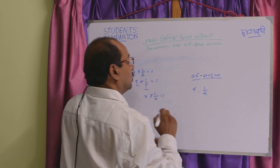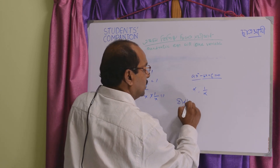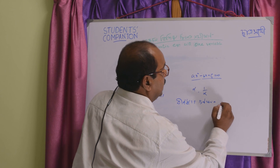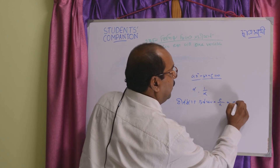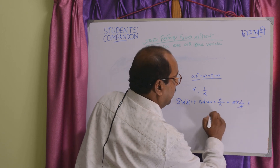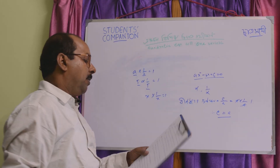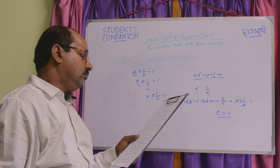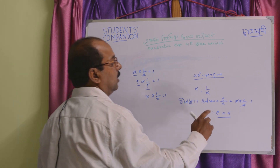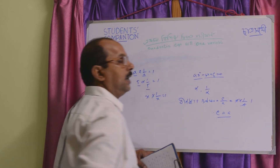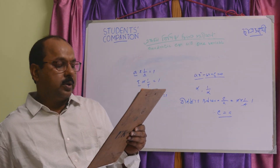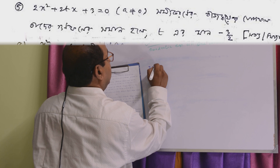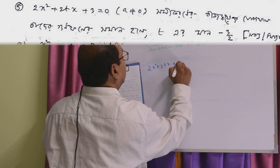If alpha and 1 by alpha are reciprocal roots, then their product is alpha into 1 by alpha, which equals 1. From the formula for product of roots, c by a equals 1, which means c is equal to a.